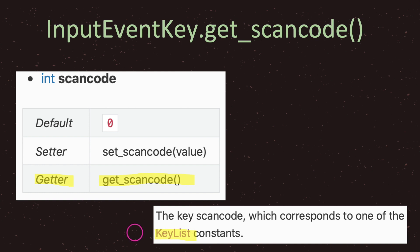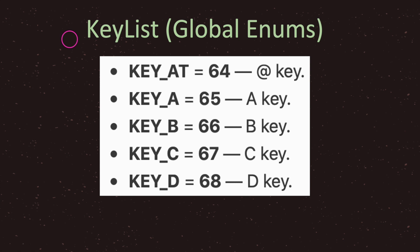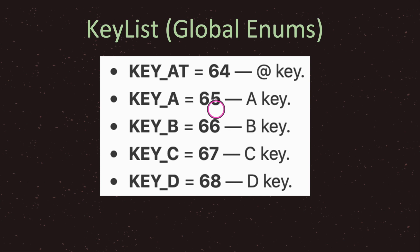Click KeyList and you'll be taken to the KeyList global enums page. Godot provides singletons and global enums, and KeyList is one of them. This is how we tell what a user pressed. For example, if the user presses the @ key the integer value returned by get_scan_code will be 64; if the user presses the letter A the integer value will be 65. It's a big extensive list that gives us complete control over how we can react to certain keyboard inputs.